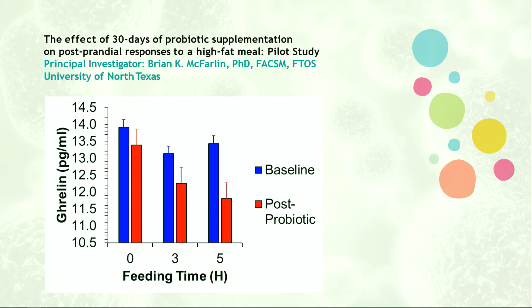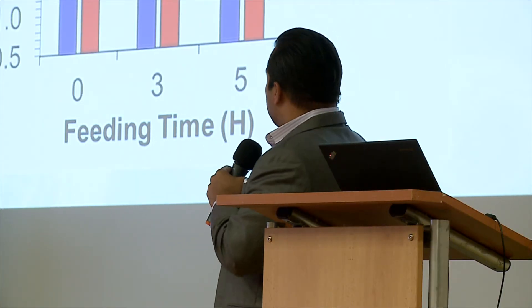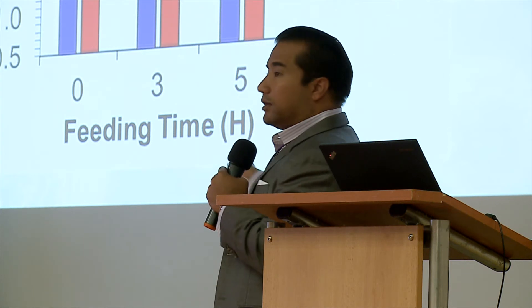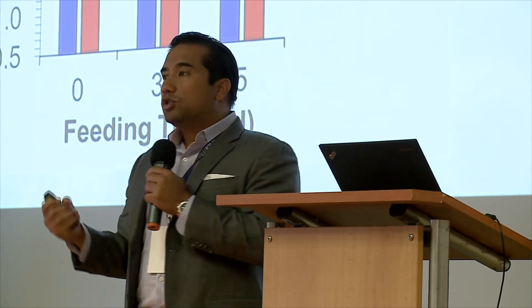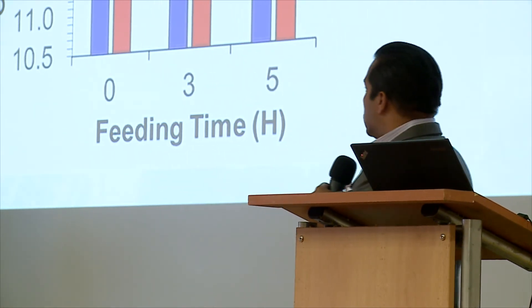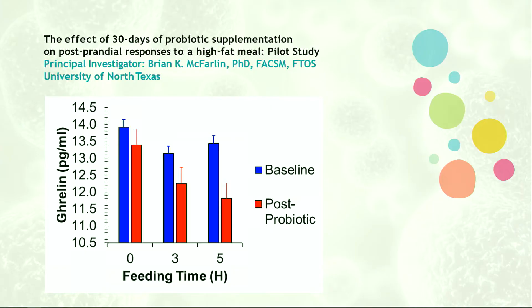We gave them a 2,000-calorie meal and barely saw any drop in ghrelin levels from the fasted state baseline. But 30 days after taking the probiotic, we saw this really classic ghrelin response as you should see postprandially. What this tells us is that the communication between the gut and the brain — where the gut is indicating to the brain that we have enough food and enough calories coming in and to stop producing the hunger hormone — is disrupted in these individuals. We were able to restore that function to a certain degree after 30 days.